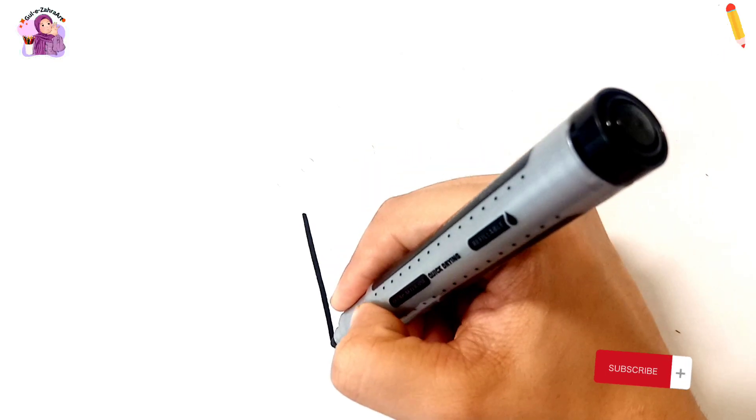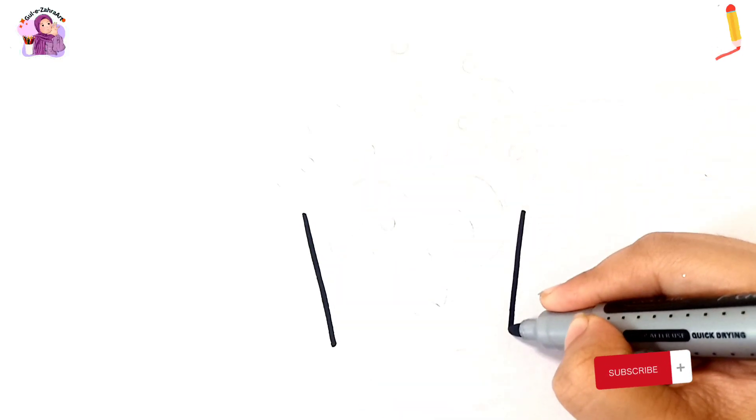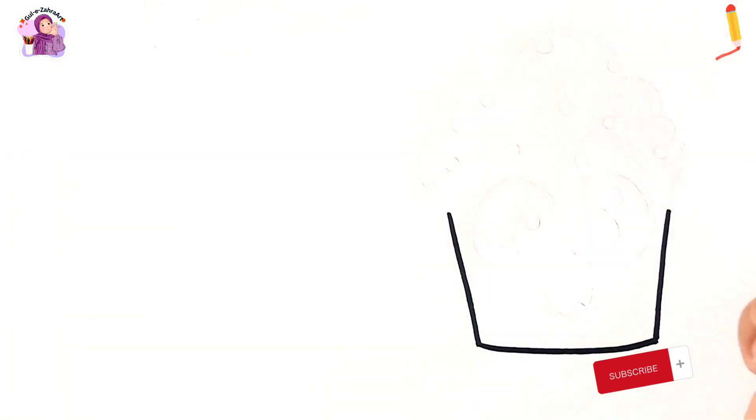First, draw the shape of cup ice cream. Until we draw it, let's learn the alphabet I.